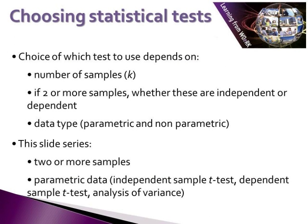In the previous slide series, we examined choosing statistical tests when looking at one sample. In this slide series, we're going to take a look at tests which deal with two or more samples. In particular, we're going to look at two or more sample tests for parametric data types. The tests we're going to cover are the independent sample t-test, dependent sample t-test, and analysis of variance.